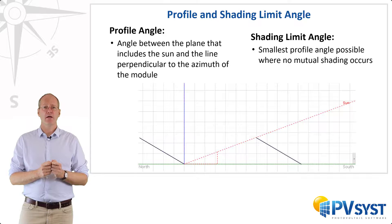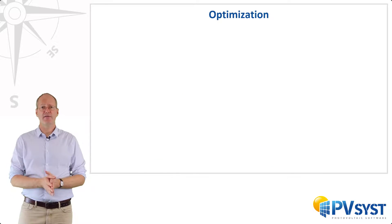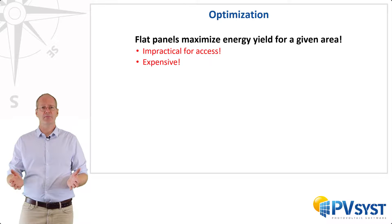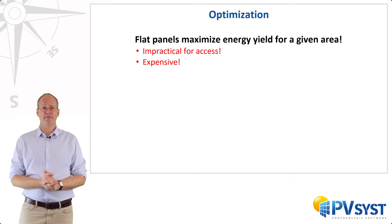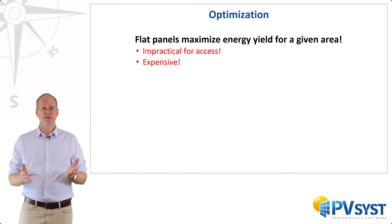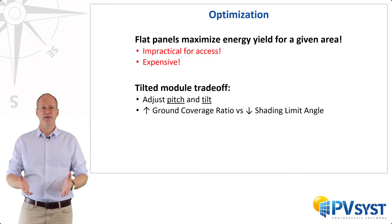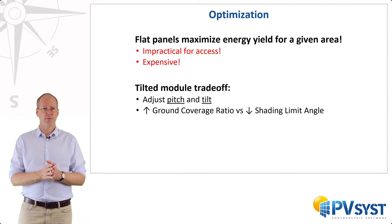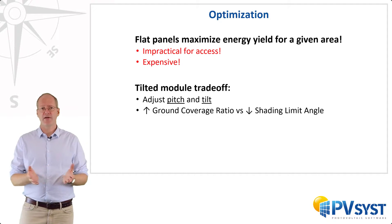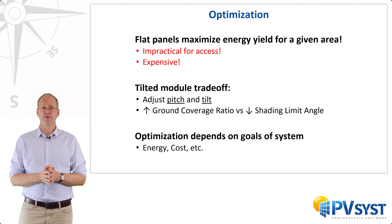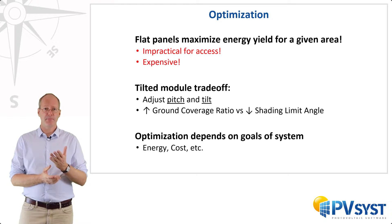So keeping in mind the shading limit angle, we can start to discuss optimization. Optimization of these systems is not trivial. If we are only maximizing for energy yield for a given area, horizontal panels placed next to each other would achieve that, but this would not be practical for accessing the PV modules and would make for a very expensive system, as each panel would produce a smaller energy yield than if they were optimally tilted. If we tilt our panels, there is always a trade-off between GCR and the shading limit angle. Maximizing GCR and minimizing the shading limit angle is preferable, but these two goals are in conflict with each other. Going deep into this optimization is outside the scope of this course, and it depends on the design goals, whether that be energy production, cost, or something else. However, PVSyst has some tools that help with this depending on your design decision.